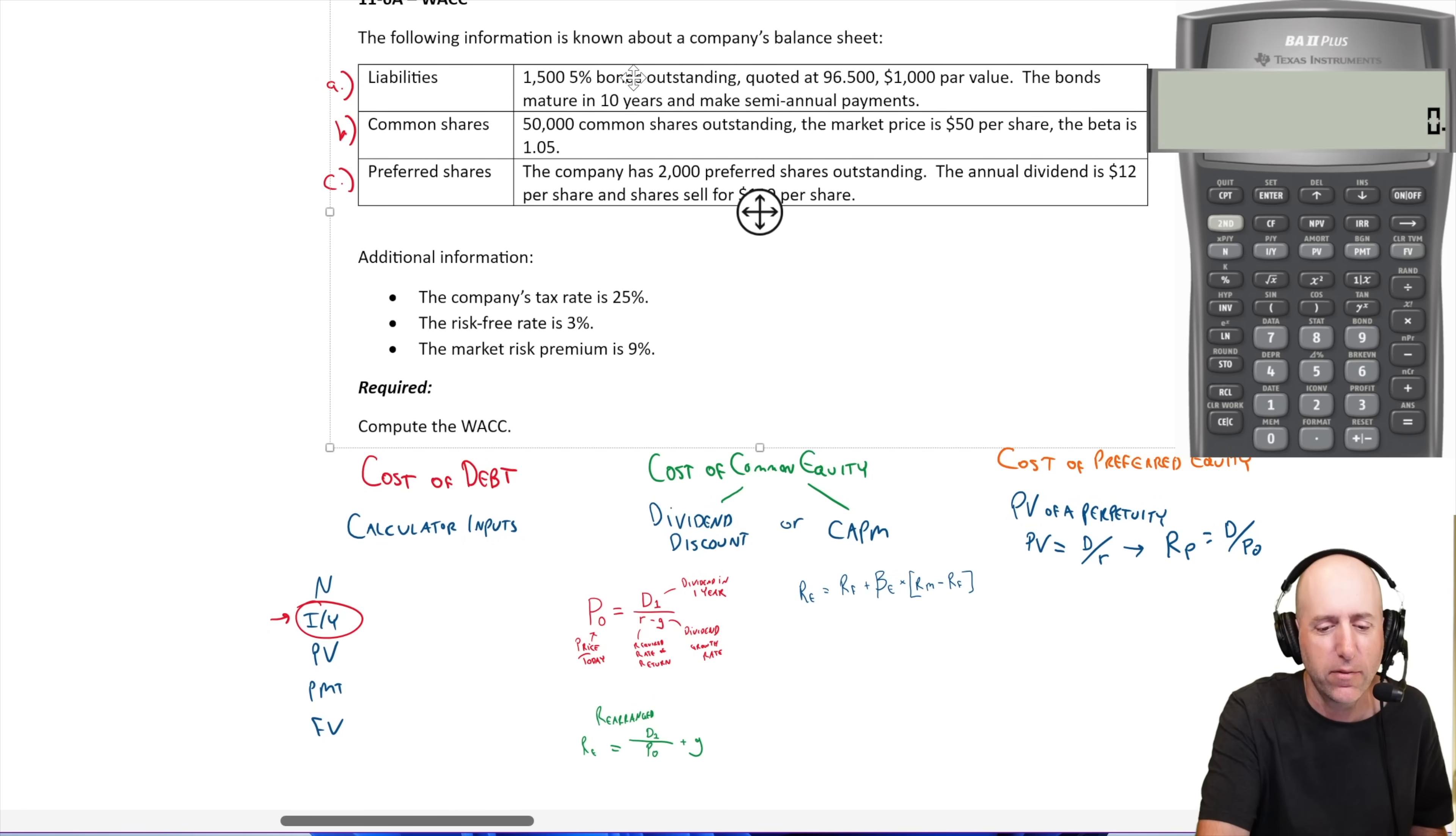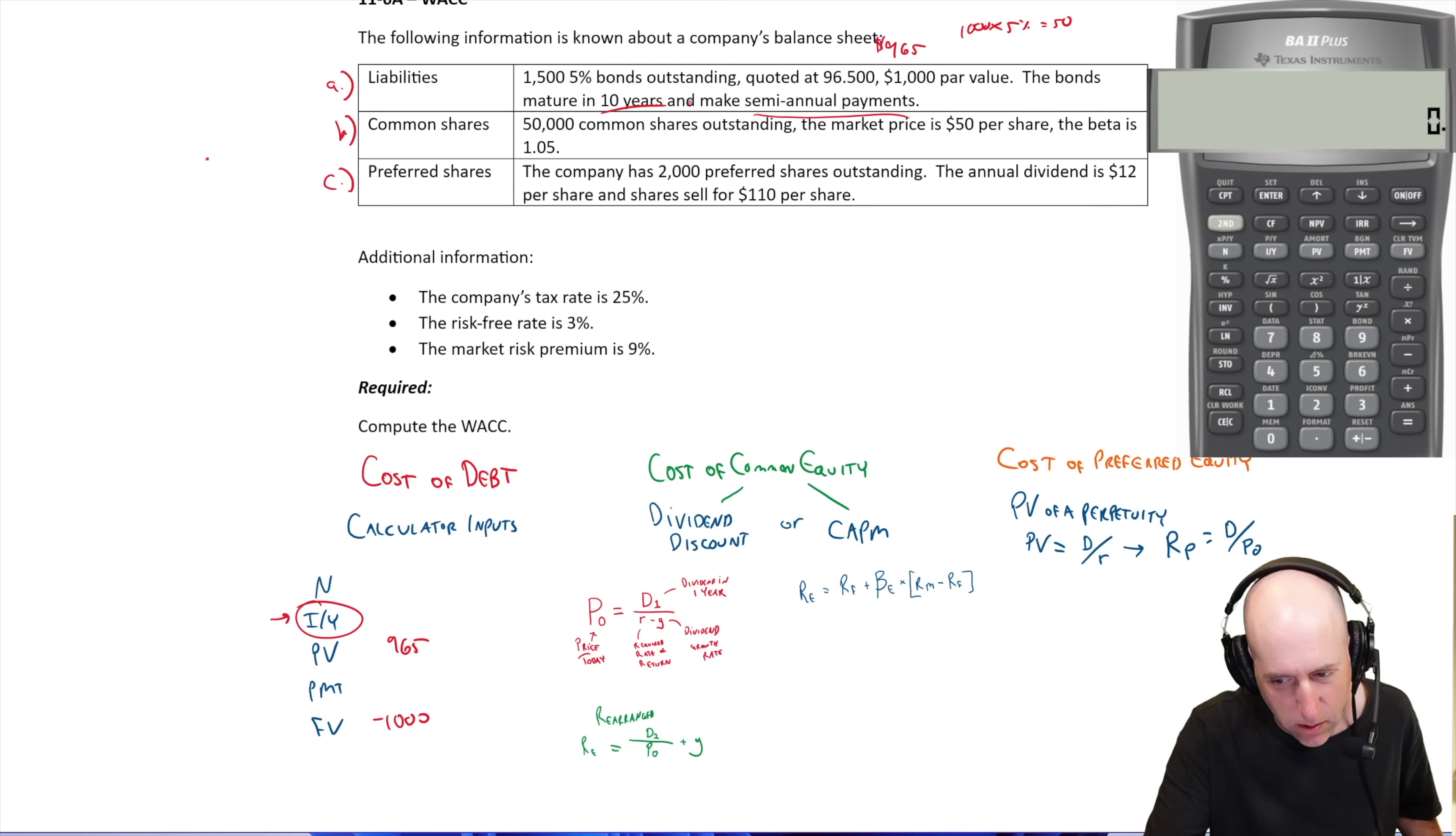Let's figure out what our inputs are in this question. So liabilities, we have 1,500, 5% bonds outstanding quoted at 96.5, $1,000 par value. So this is 96.5% of $1,000. So the price today is $965. And in fact, that's the PV. $1,000 par value means in however many years we got to pay back a thousand. And they're 5% bonds. So $1,000 times 5% is $50 in interest per year, but they make semi-annual payments over the next 10 years. So semi-annual means half that in interest, right? That's $50 per year. It would be $25 per six month period. And the number of periods, well, it's 10 years, which is 20 semi-annual periods.